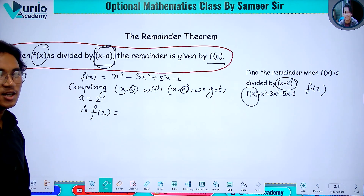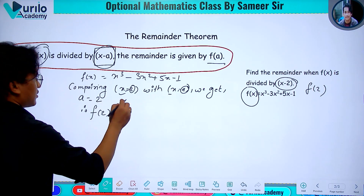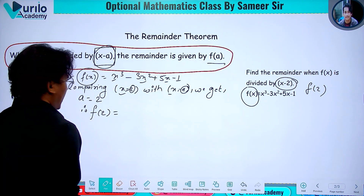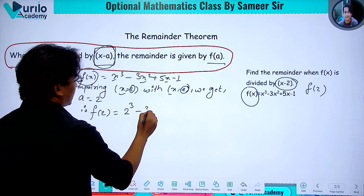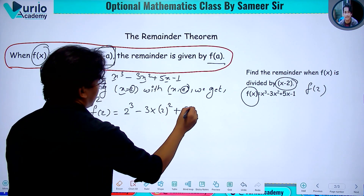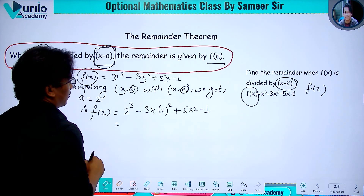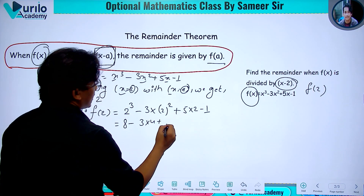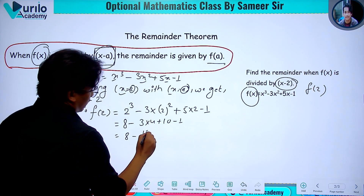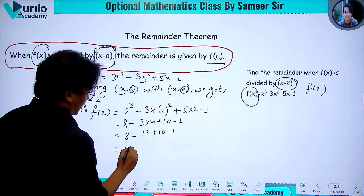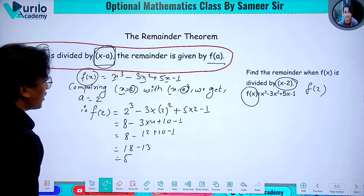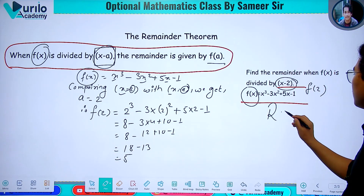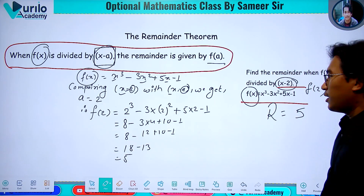So we calculate f of 2: substitute x equals 2. That gives 2 cubed minus 3 into 2 squared plus 5 into 2 minus 1, which equals 8 minus 12 plus 10 minus 1, giving 18 minus 13, so the remainder is 5.